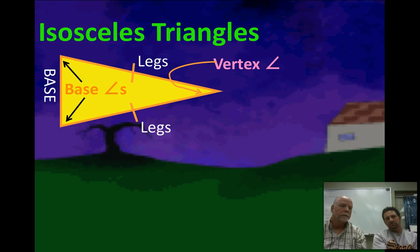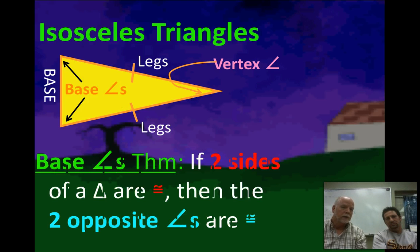So in an isosceles triangle the two base angles are always congruent to each other. This theorem says if two sides of a triangle are congruent, then the two opposite angles are congruent. What we mean by that are the angles opposite the two legs. Base angles of an isosceles triangle are congruent, always. And we don't know what they measure until we figure out, but they're always congruent to each other.